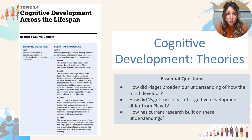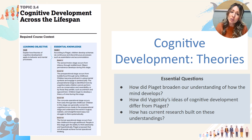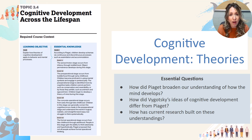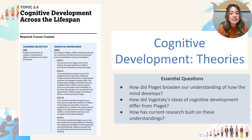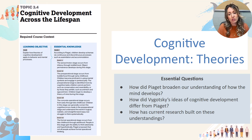Some essential questions we're going to be looking at today are: how did Piaget broaden our understanding of how the mind develops, how did Vygotsky's ideas of cognitive development differ from Piaget's, and how has current research built on both of these understandings.